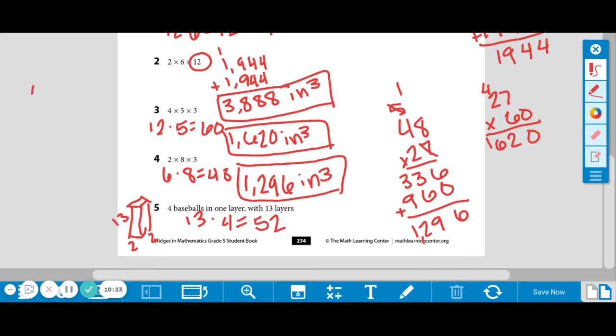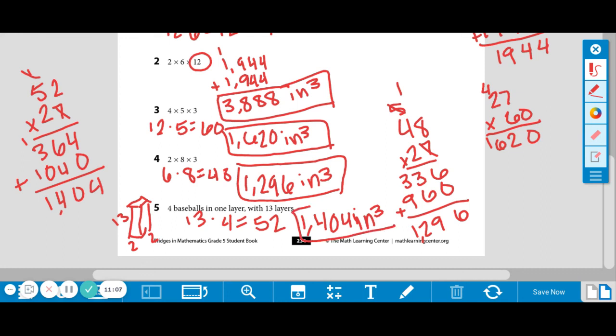So off to the side we go. 52 times 27. 7 times 2 is 14. 7 times 5 is 35. Plus one more is 36. Place your 0 to hold your place value because you're moving spots. 2 times 2 is 4. 2 times 5 is 10. Add up for our grand total of 1,404 inches cubed. Okay. So this was a little extra step because we had to find the volume in baseball boxes and then in marble boxes. But I believe everyone did great. Thank you for hanging on with me and be sure to finish today's math lesson.